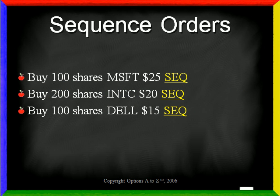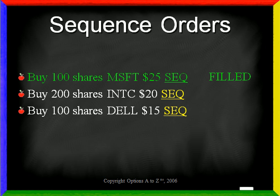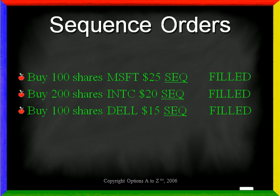Sequence orders work a little differently from OCOs. Assume you placed the same three orders, but this time mark them with the sequence condition. If the first order fills, then it activates the second order. And if that order is ever filled, then it in turn activates the next order on the list. The executions, if any, must occur in sequence down the list of orders. The first order must fill before the second, the second before the third, and so on.